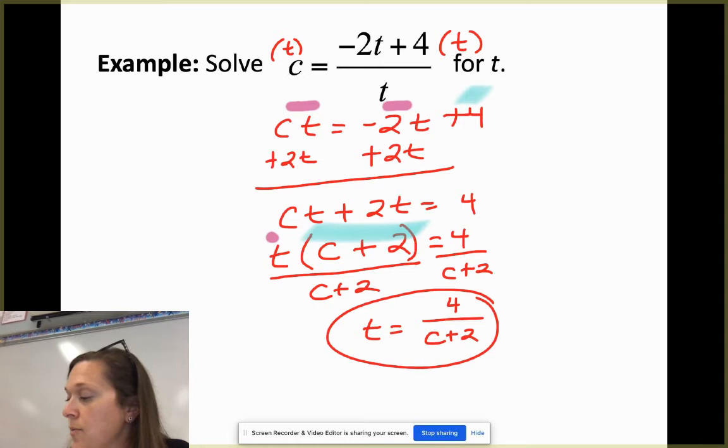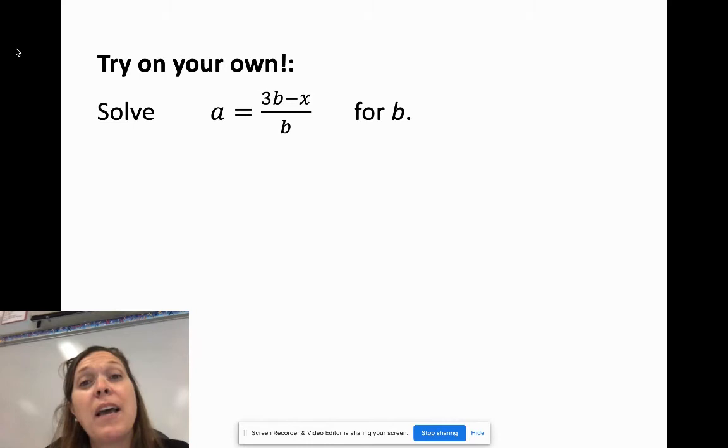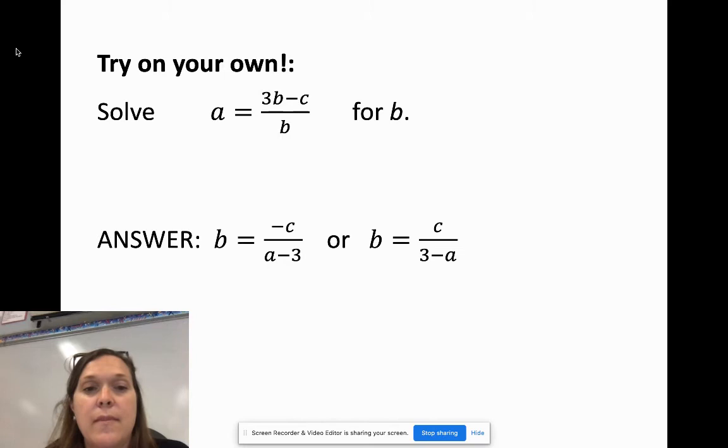Again, pause this video at any point in time if you feel like you need to stop to catch up with writing things down. I'm just trying to keep moving so these videos don't end up being super long. Okay, I'm going to have you try this one on your own. Solve for B. Welcome back. Hopefully you got the answer of, hopefully you got the positive version, the right side. B equals C minus, or all over 3 minus A. If you move to the other side, you could have possibly also gotten B equals negative C all over A minus 3. Either of those are correct answers. So as long as you got to one, good job. If you didn't, take a picture of your work if you can't figure it out. Shoot it to me in the Remind app. I'll try to help you.